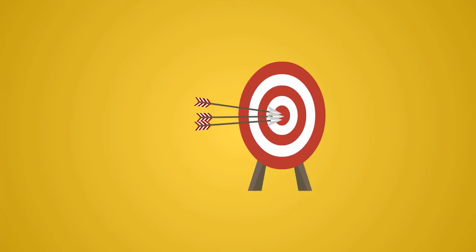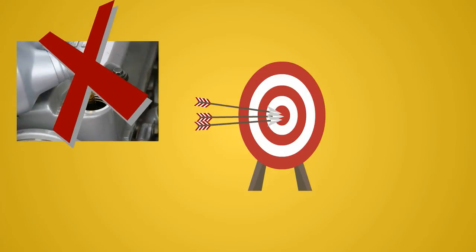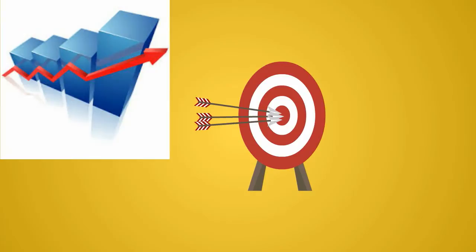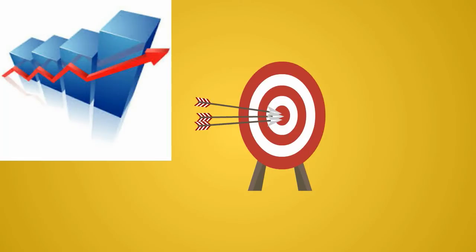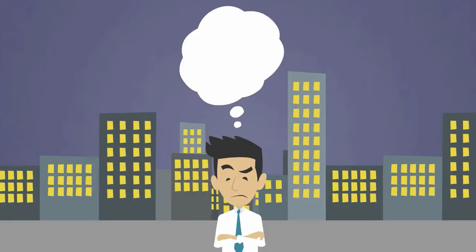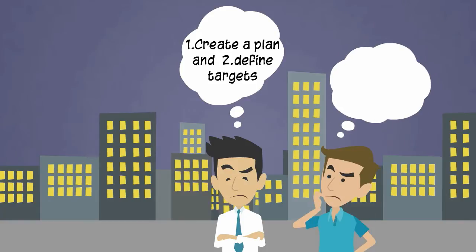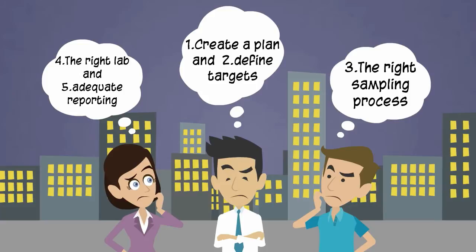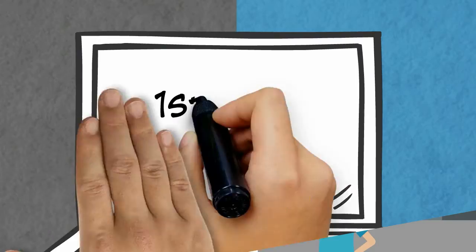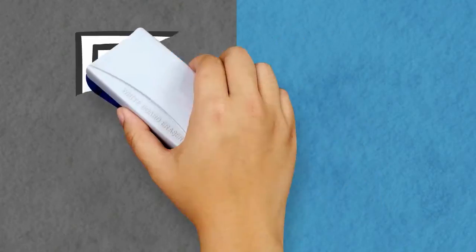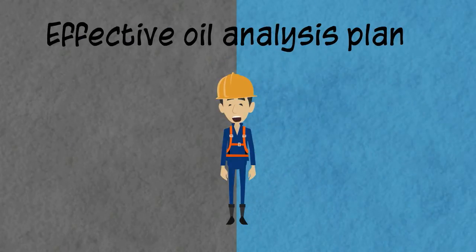The objective of a best-in-class oil analysis program should reach beyond deciding on oil changes and be a means to improve reliability of equipment. Here is how you can implement an effective oil analysis program through five steps: create a plan, define targets and alarms, implement the right sampling process, choose the right lab, and report results adequately.